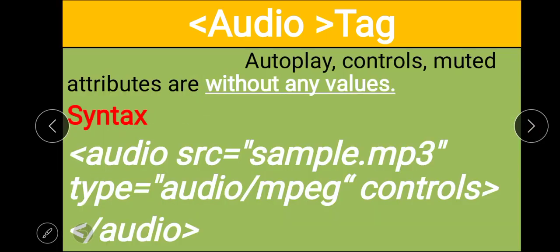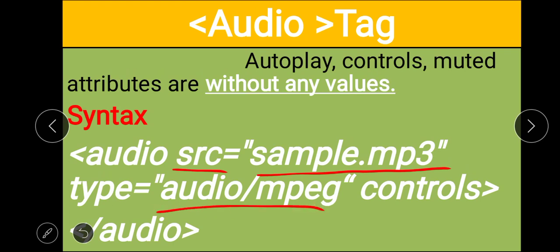Note: autoplay, controls, and muted are empty attributes — they have no value. The syntax is: audio src='sample.mp3' — where sample.mp3 is the path to the audio file with the .mp3 extension. You also add type='audio/mpeg' and the controls attribute so that play/pause buttons appear, then close the audio tag.